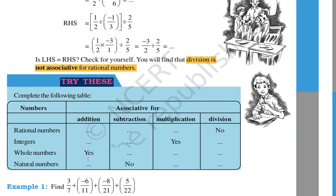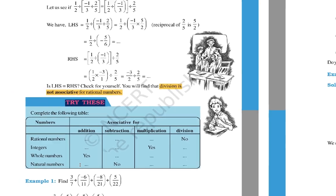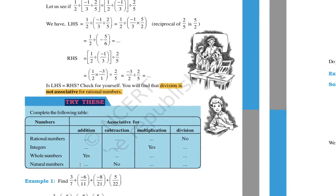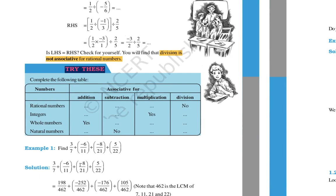So for rational numbers: associative property — addition yes, subtraction no, multiplication yes, division no. Similarly you have to do this for integers, whole numbers, and natural numbers.